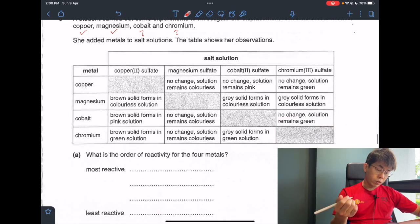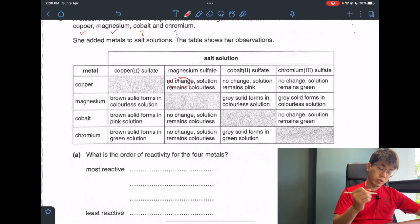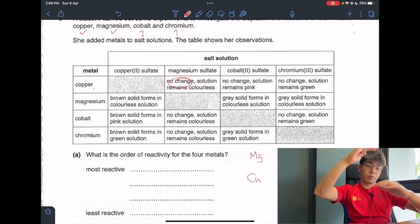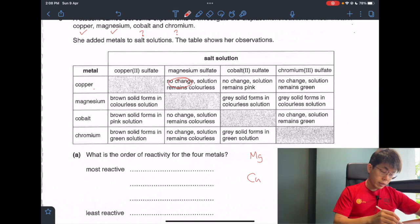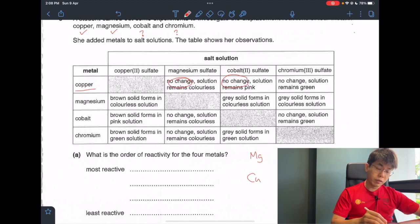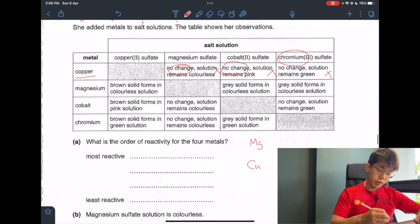We can see that when I add copper to magnesium sulfate, no change occurs. So I am very sure and I already know that magnesium is more reactive than copper. So magnesium above copper. Then we can see that copper has no reaction with cobalt sulfate. That means it is not able to displace cobalt, and copper also cannot displace chromium. It would mean that copper is the least reactive.